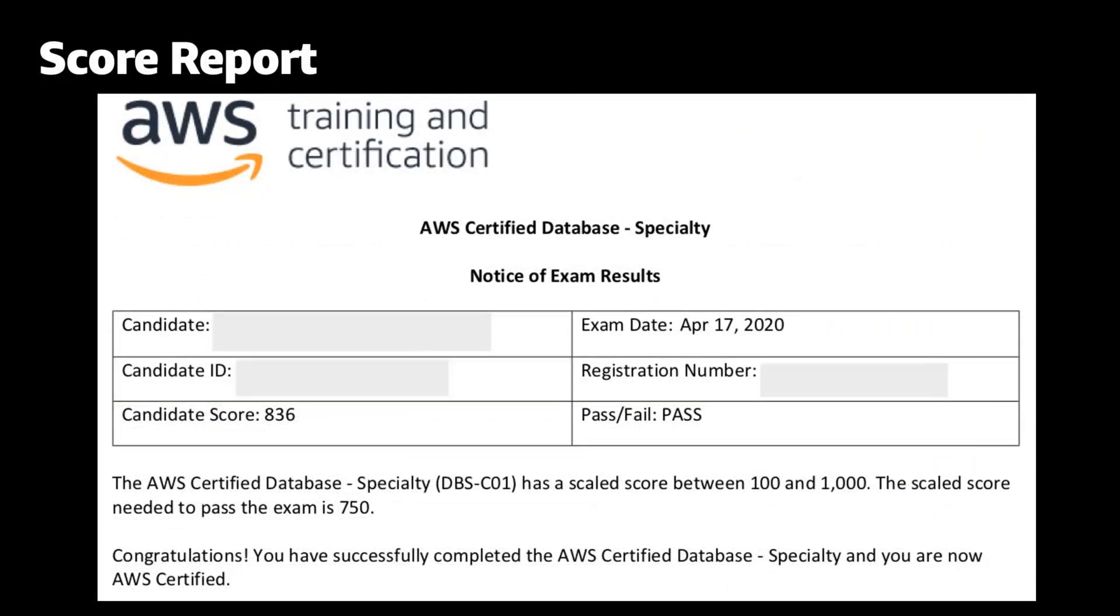In this example score report, the candidate achieved a score of 836 and was awarded the certification because the passing score is 750. The report also shows that the possible scores can range from 100 to 1,000. However, this is a scaled score, so the 836 does not mean that the candidate answered 83.6% of the questions correctly, and this is a very common misconception.